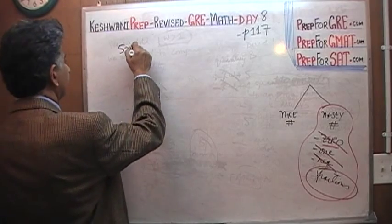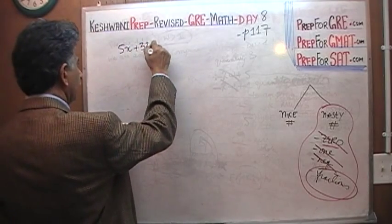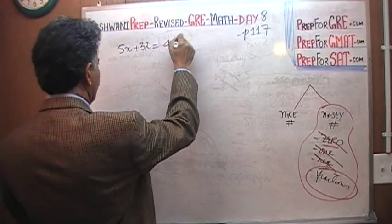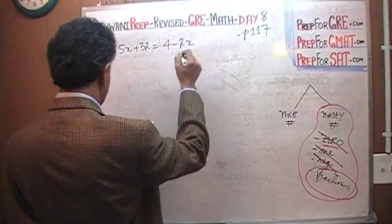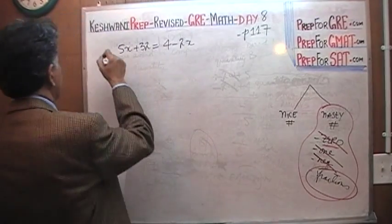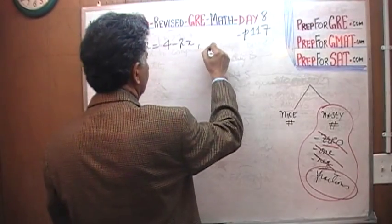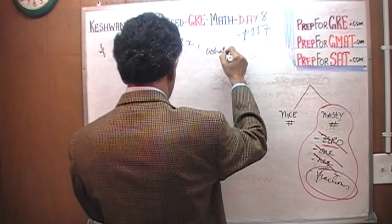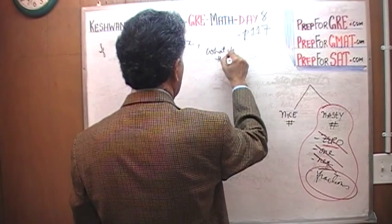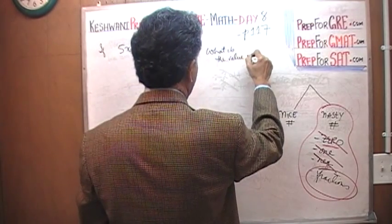We are told that 5x plus 32 equals 4 minus 2x. The question is, what is the value of x?